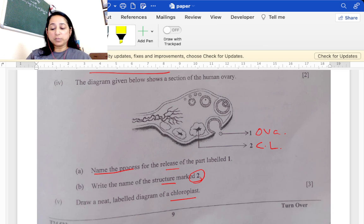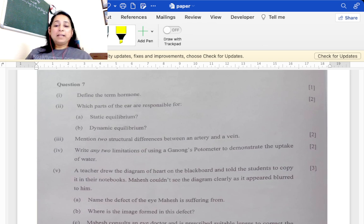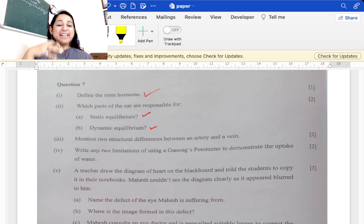Draw a neat labeled diagram of chloroplast. This was easy. Define the term hormone: chemical messengers. Which part of the ear is responsible for static and dynamic equilibrium? Static, where no work is done, utriculus and sacculus are involved. Dynamic, all the work done, only semicircular canals are involved.